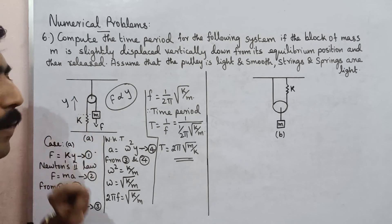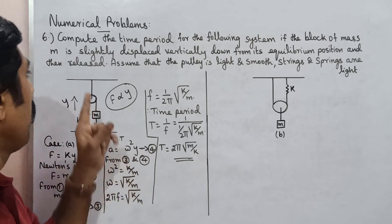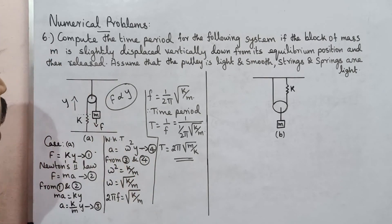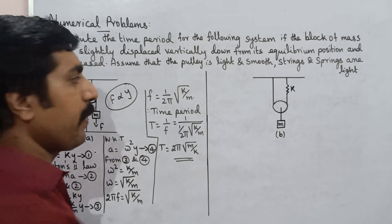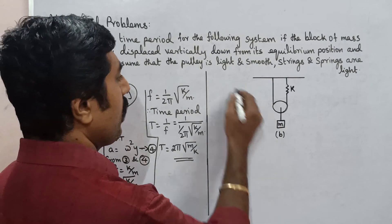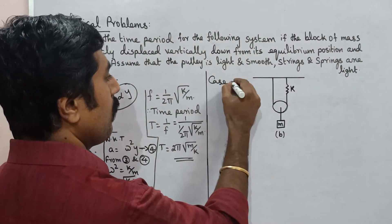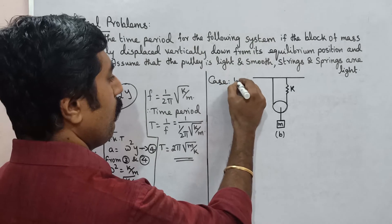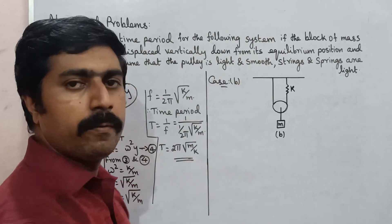The time period T is the reciprocal of frequency, so T equals 1/f. Therefore, T equals 1 divided by [(1/2π) times the square root of k/m], which gives T equals 2π times the square root of m/k. This is the time period formula for Case A.